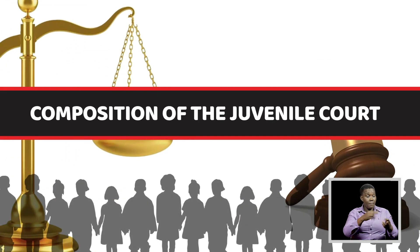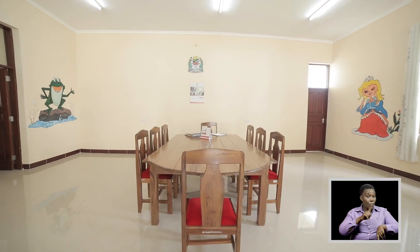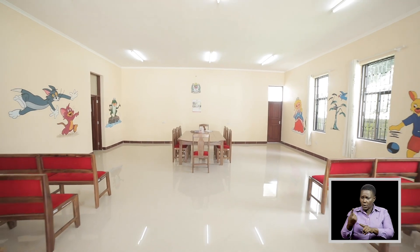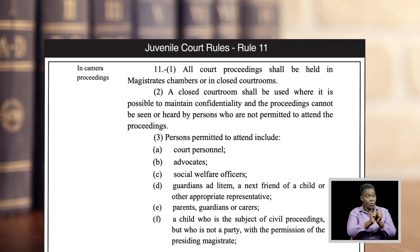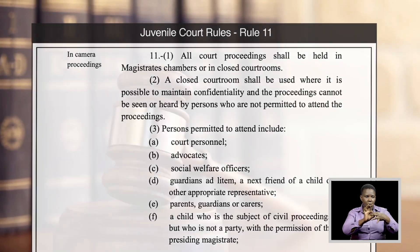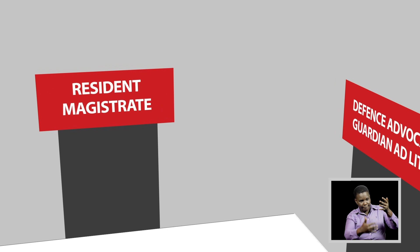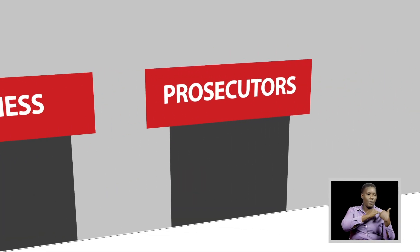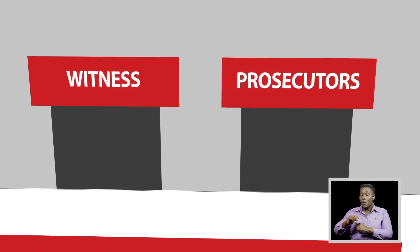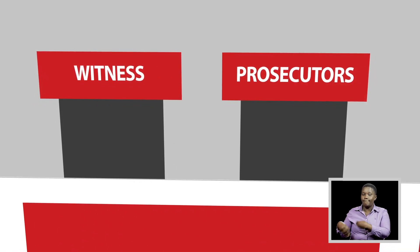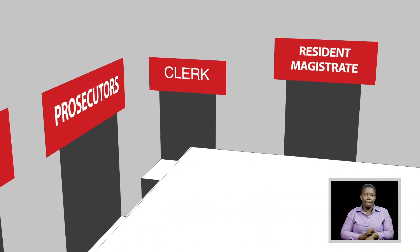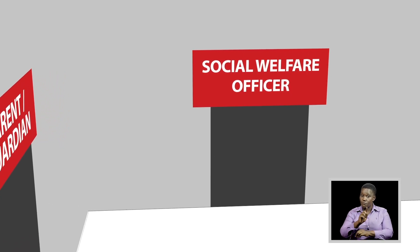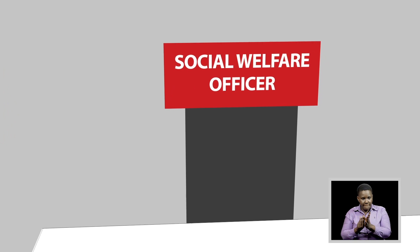Composition of the Juvenile Court. The proceedings in juvenile court should be held in camera — that is, in private — with the aim of maintaining confidentiality. Rule 11 of the juvenile court rules stipulates the personnel who are allowed to attend the juvenile court: resident magistrate, responsible for leading proceedings; clerks, responsible for administration; public prosecutors, responsible for prosecuting cases and delivering sufficient evidence; advocates, responsible for representing children; and social welfare officers, responsible for supporting children including conducting a social inquiry report.